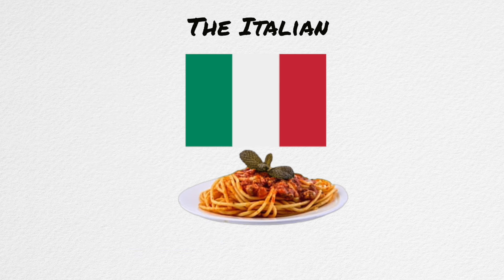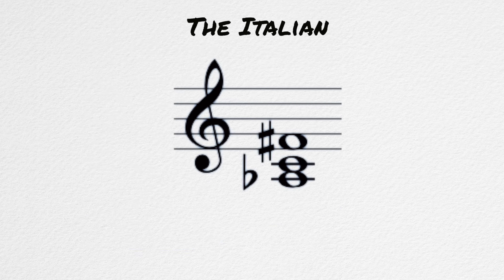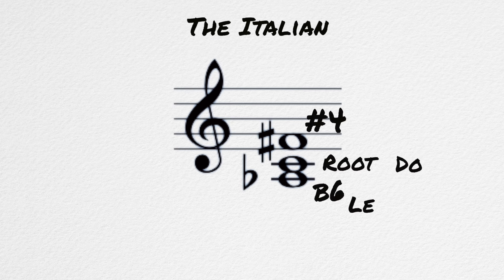The first is the Italian sixth. Out of the three types, the Italian is the only three-note chord. The three scale degrees it contains are the root, the sharp four, and the flat six — or le, do, fi if you prefer the solfege.